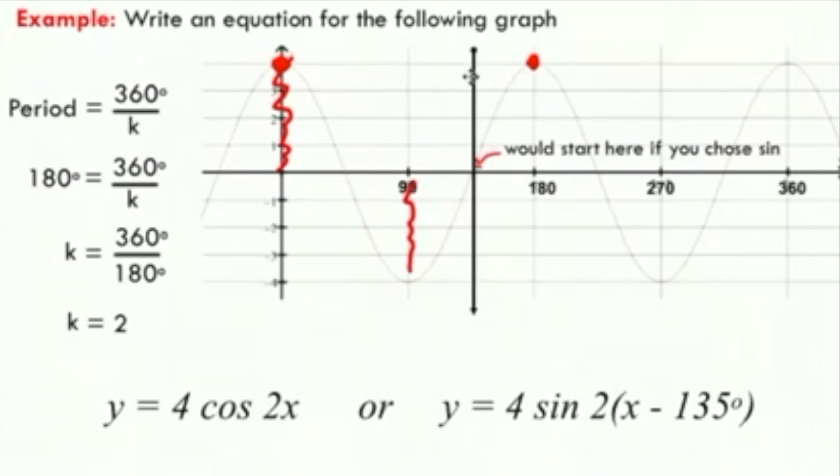Okay, so it's really your choice. There are really an infinite number of equations that you could write. I could also choose to start here. If I chose sine and I could call this a reflected sine graph, instead of going upwards, this graph would be going downwards. My phase shift would only be 45 degrees if I chose to start at that point. There's really an infinite number of possibilities here.